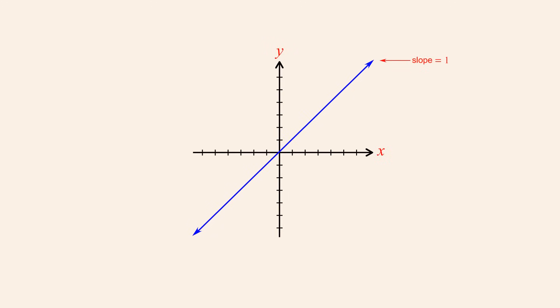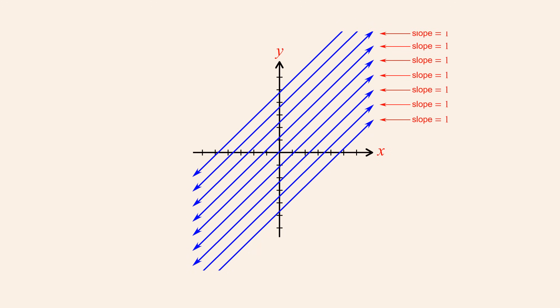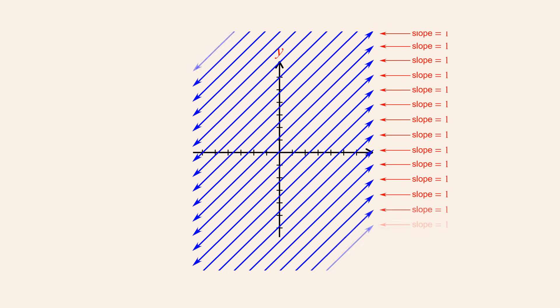We know from geometry that we cannot uniquely describe a line knowing only its slope, since any plane contains an infinite number of parallel lines with the same slope.